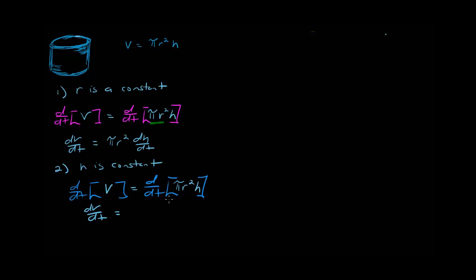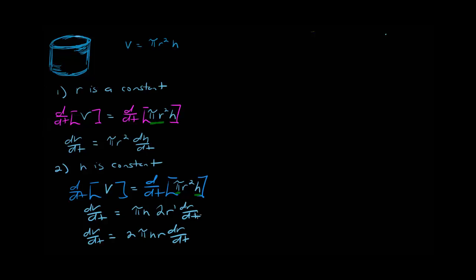On the right side, our constants are pi and h. Since multiplication is commutative, we can think of this as pi·h·r squared. Pulling the constant out, we multiply by the derivative of r squared with respect to t, where r is a function of t, giving 2r dr/dt by the chain rule. Cleaning this up, the related rates equation for this scenario is: dV/dt = 2πhr dr/dt.